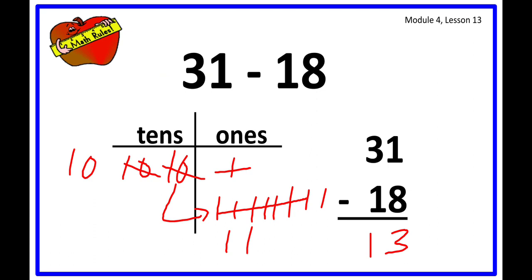And after decomposing a 10, we now remove the 8. So what is remaining there? 3 is remaining. Now we go to the tens side, we are going to remove one 10. So how many tens are remaining? We now have just one 10 remaining. So 31 minus 18 is 13.